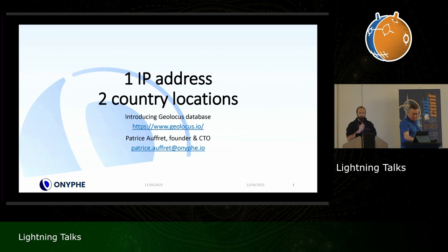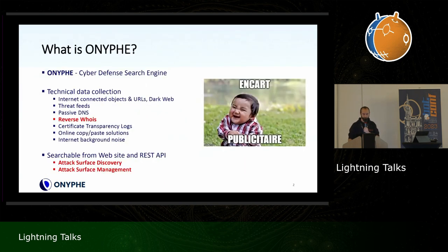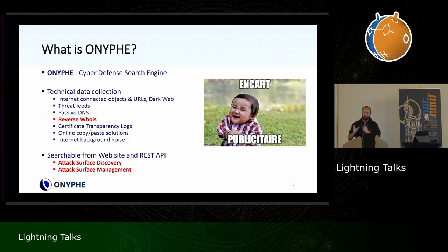One IP address can have two country locations — this talk is about geolocation of IP addresses. ONIF is a cyber defense search engine specialized in attack surface discovery and attack surface management. We collect many kinds of data, including WHOIS data, which is the subject of this lightning talk.